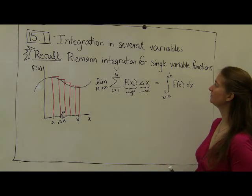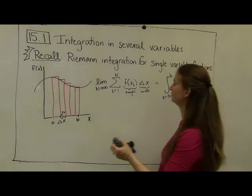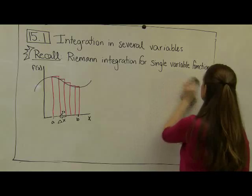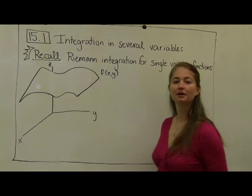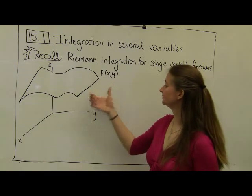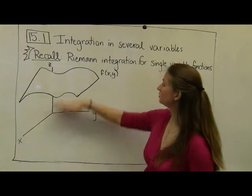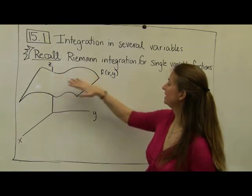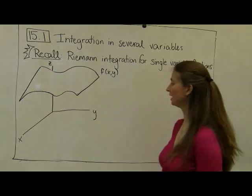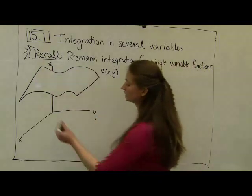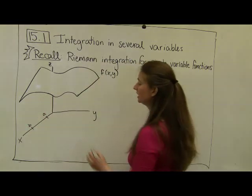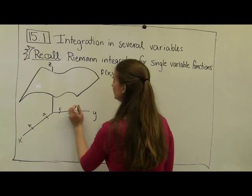So this is just a recap of what Riemann integration looks like for single variable functions. Let's compare that to what we find for multivariable functions. Now I have a multivariable function where my inputs are from the xy plane and my outputs are the z values. The graph of this is a curvy sheet, which is my f of x, y. And instead of integrating just from a to b like we did with a single variable function, now we're going to integrate over some rectangular region.